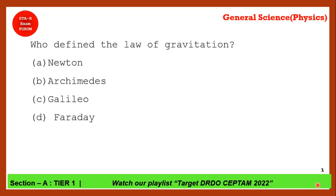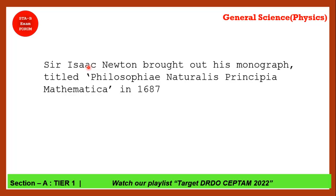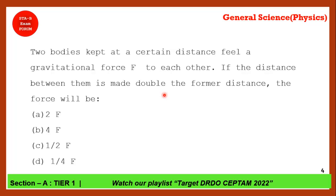The next question: who defined the law of gravitation? The correct answer is option A — Sir Isaac Newton. Sir Isaac Newton brought his monograph titled Philosophiae Naturalis Principia Mathematica in 1687, where he described this law.